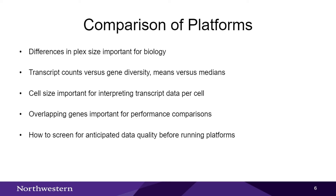The five key areas we wanted to address were: differences in plex size and their importance for biology; the difference between transcript counts and transcript diversity; means versus medians in dealing with data skewness; cell segmentation and cell size between the two platforms using overlapping genes for performance comparisons; and how block quality can be used as a screening tool before running samples on platforms.